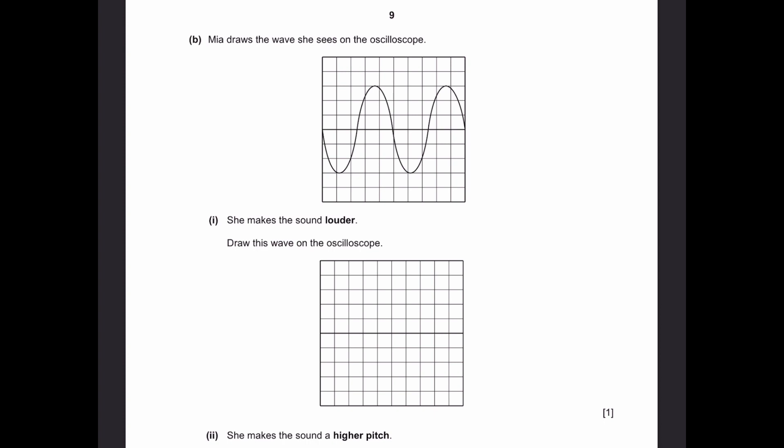B. Mia draws the wave she sees on the oscilloscope. She makes the sound louder. Draw this wave on the oscilloscope. Alright. We know that a sound wave has amplitude and frequency. Frequency is the number of times we have a down and up in one wavelength. So over here we have one and two. And the amplitude is the height. So from the baseline, you have a height of three down and three up. So you make it louder, then this amplitude increases. And therefore, we can draw something. So we can draw it like it's four down and four up with each wave.